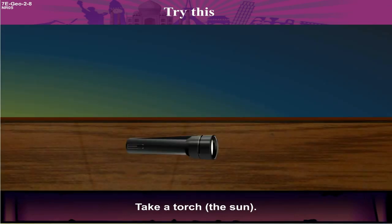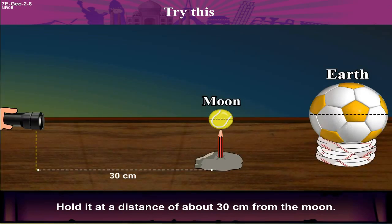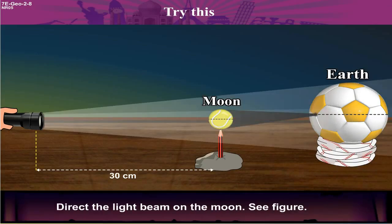Take a torch, i.e. the sun. Hold it at a distance of about 30 cm from the moon. Direct the light beam on the moon.